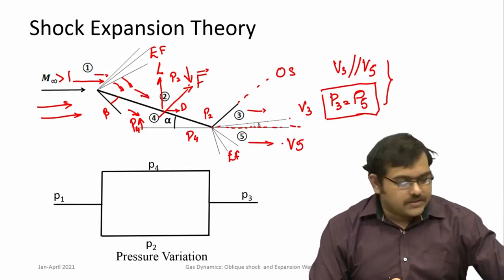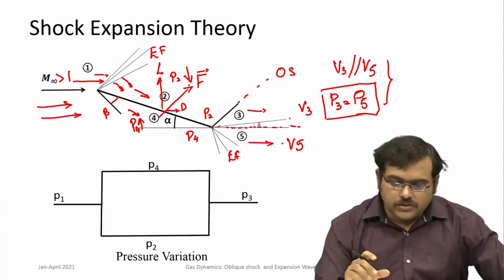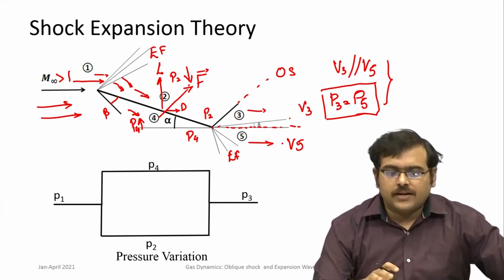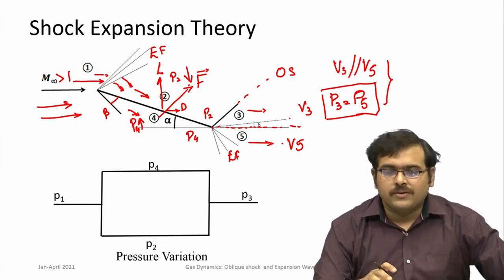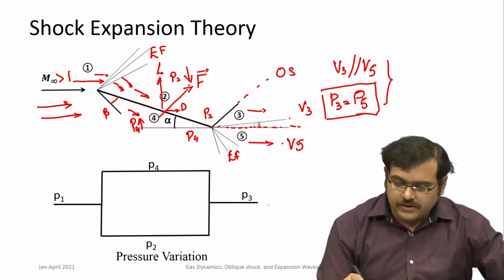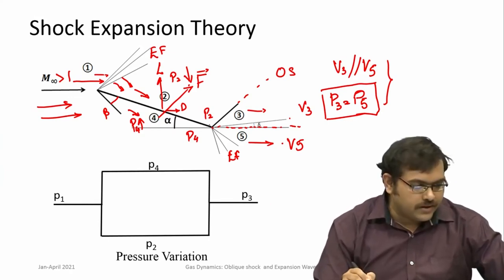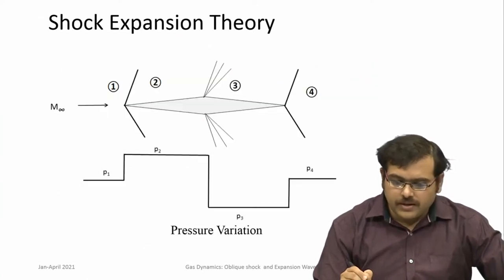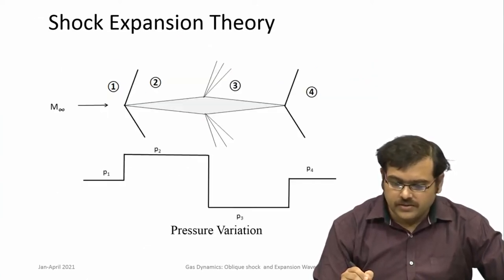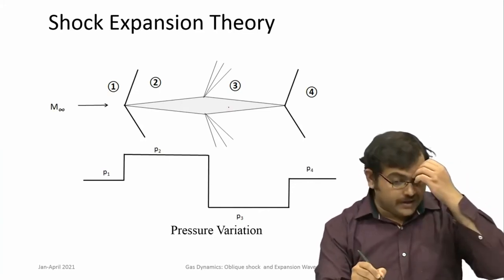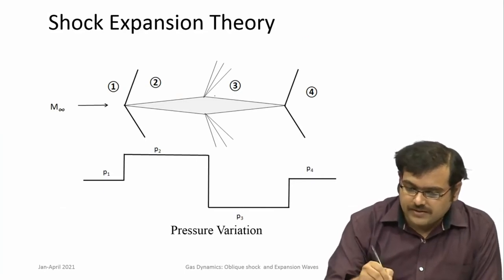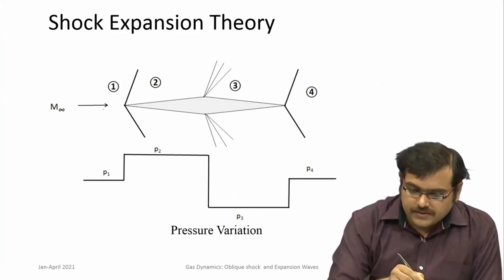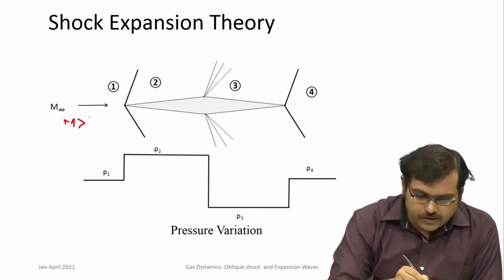You can also have discontinuities in temperatures and densities; pressures have to be the same. You can now plot these kind of wave diagrams for several configurations. What is plotted here is the pressure variation at the surface. Similarly you can plot the pressure variations at the surface for these kinds of airfoils called diamond-shaped airfoils — you can see the shape is that of a diamond — when facing a Mach number greater than 1.